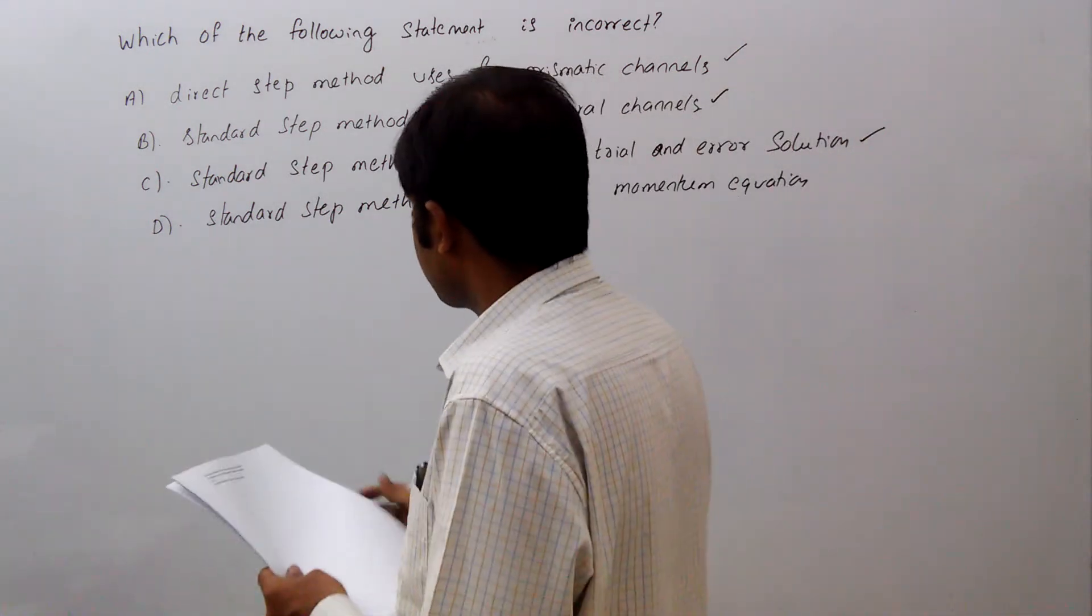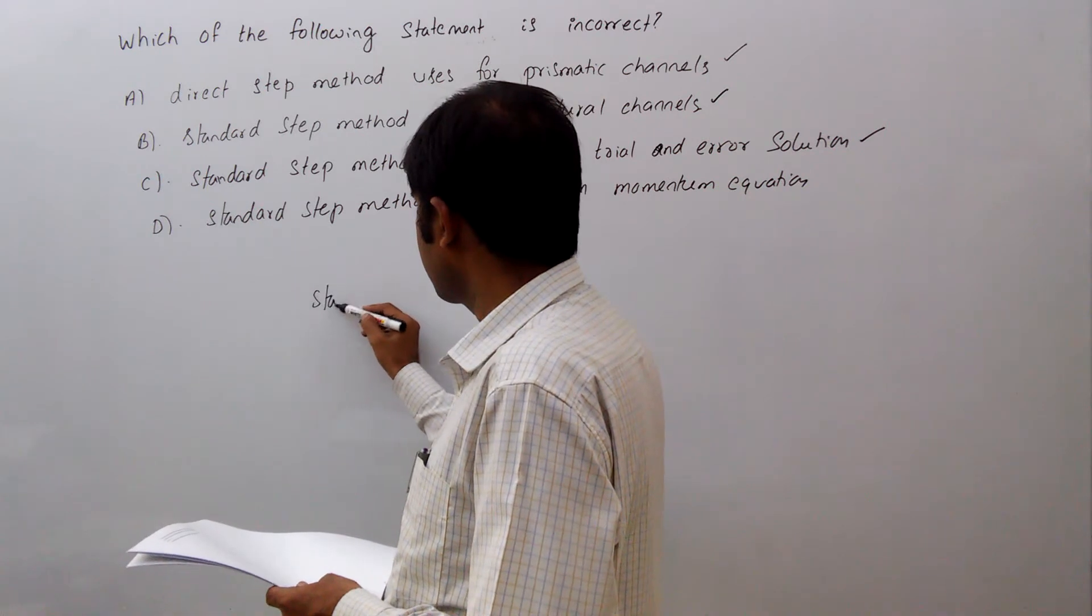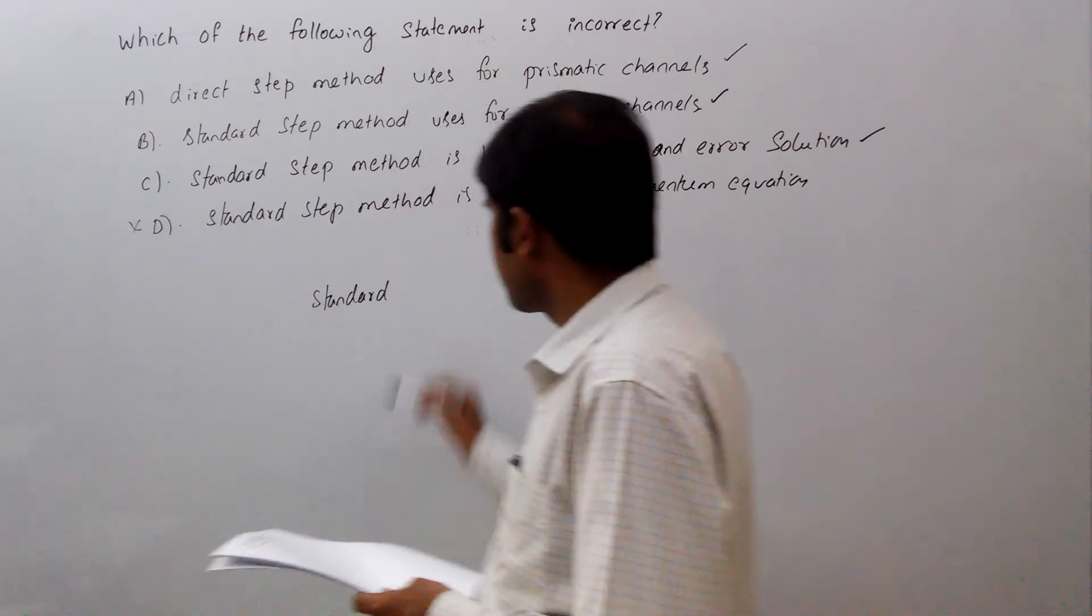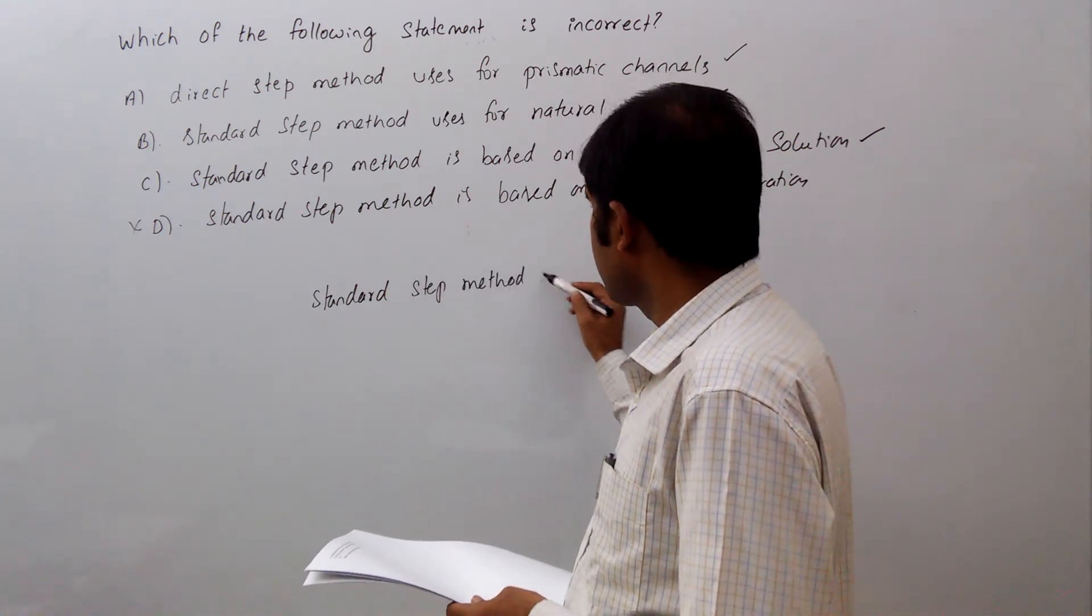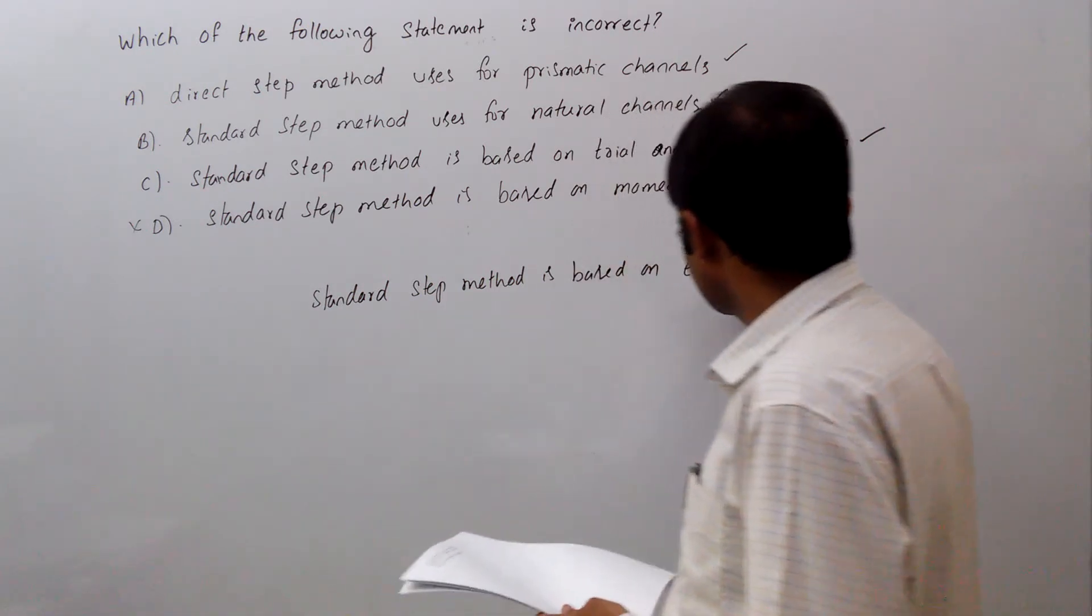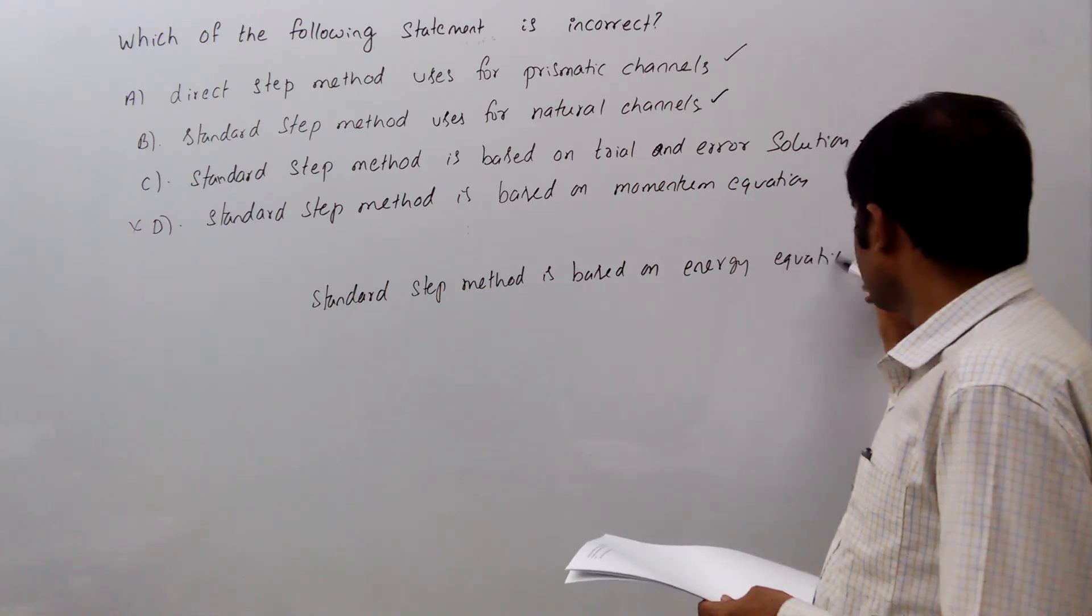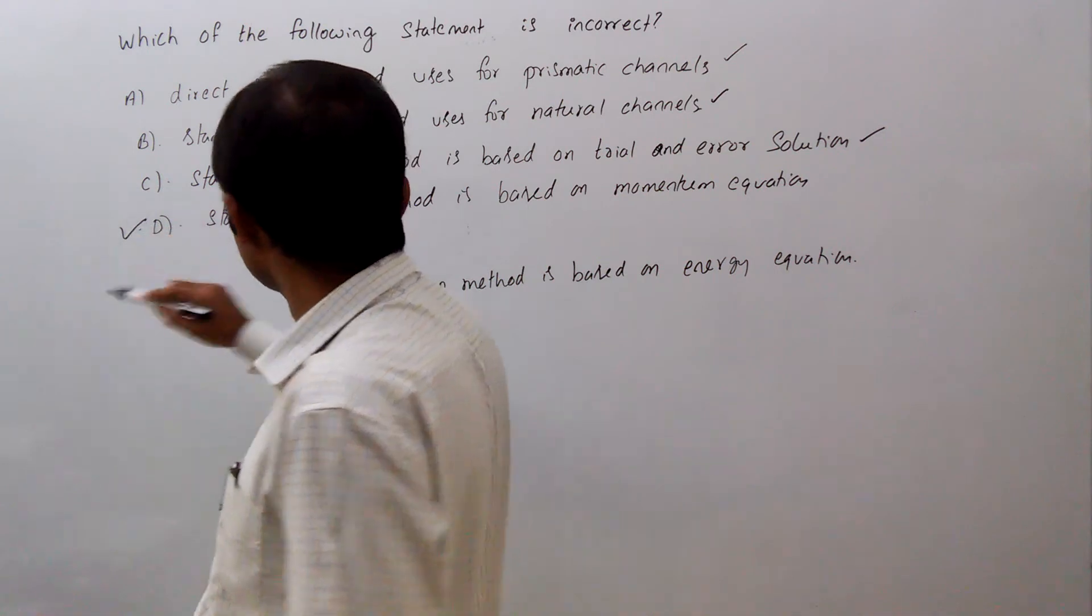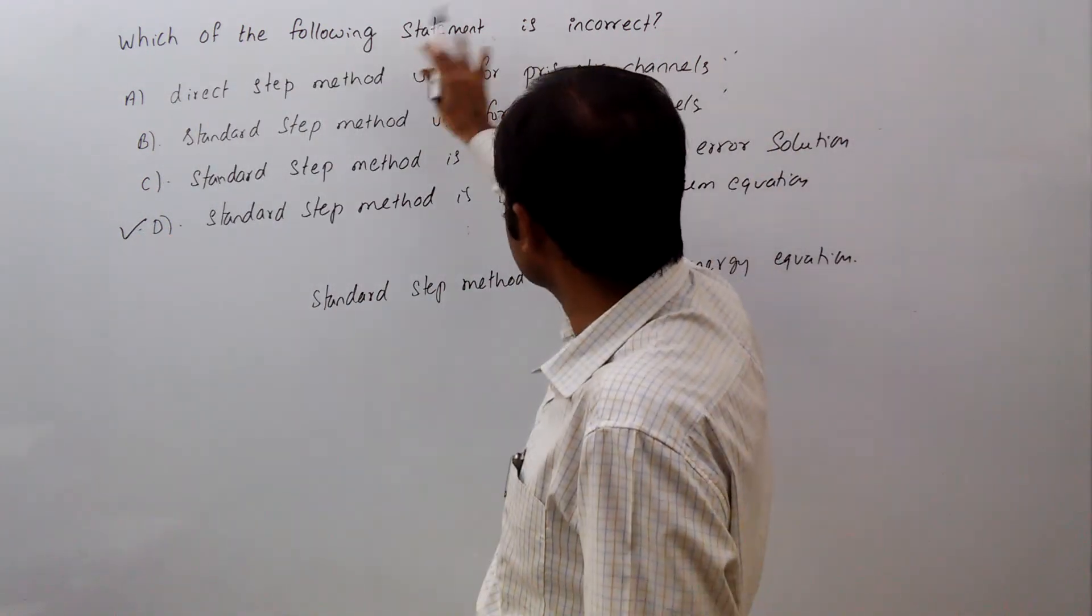Fourth one, if you see, standard step method is based on energy equation. Standard step method is based on energy equation. So the wrong statement is D. So option we need to choose as incorrect statement is D.